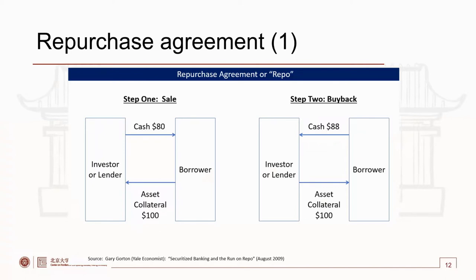In traditional finance, the Repurchase Agreement is an important application of ABS. The Repurchase Agreement is a short-term transaction between two parties in which one party borrows cash from the other by pledging financial security. In the first step, the borrower mortgages assets that are worth $100 and then gets cash of $80. In the second step, the borrower returns $88 and redeems his assets.